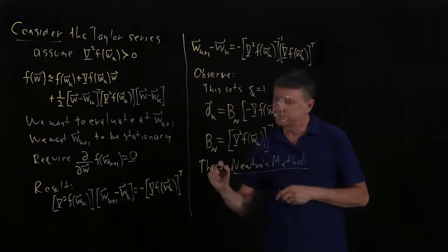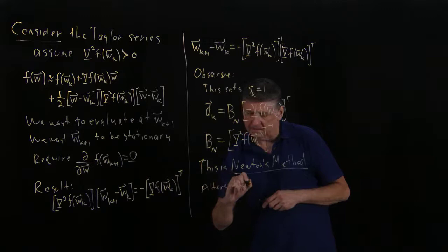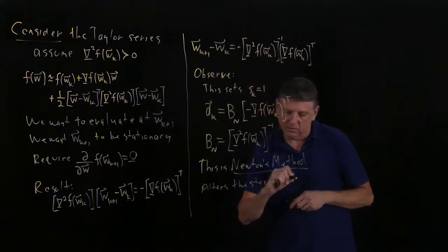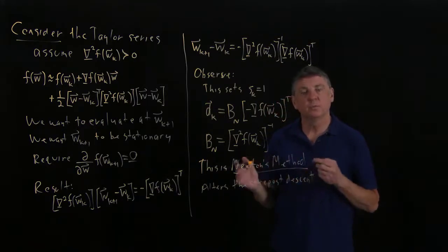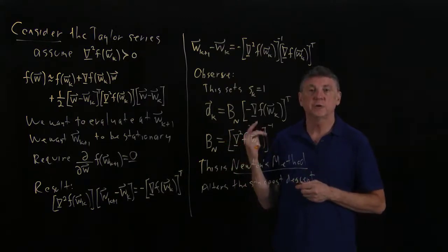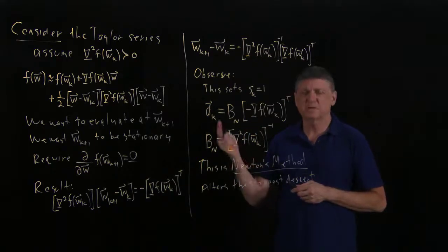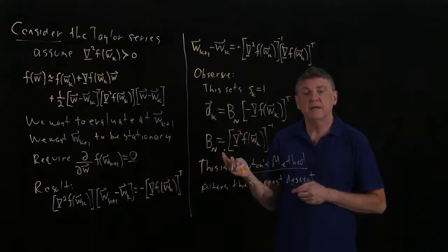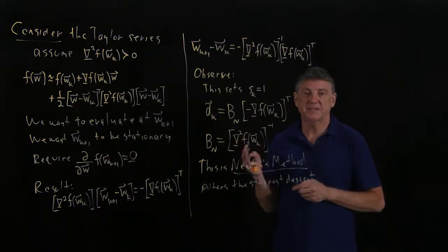Newton's method alters the steepest descent. We now have three ways to perform these descents: we could use steepest descent; we could use a manually selected alteration by a symmetric positive definite matrix, which will probably be diagonal for scaling; or we could do it automatically by using the inverse of the Hessian at each iteration.